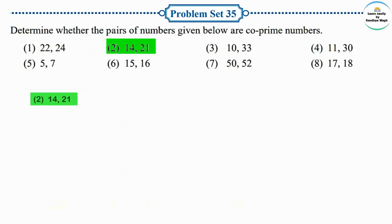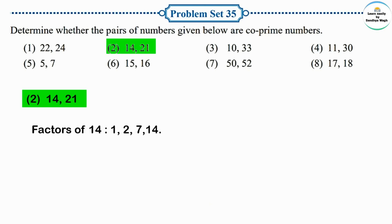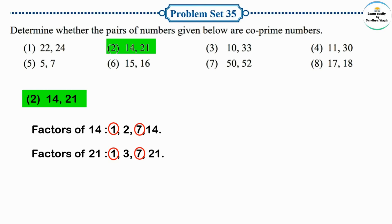Next pair: let us find the factors. Factors of 14: 1, 2, 7, 14. Factors of 21: 1, 3, 7, 21. The common factors of 14 and 21 are 1 and 7.